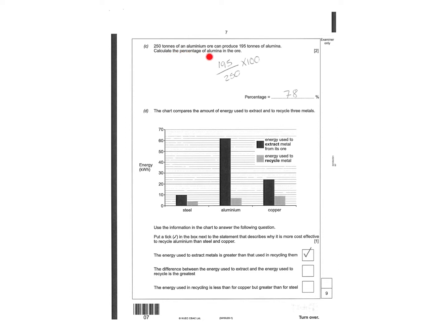250 tons of aluminum ore can produce 195 of aluminum. Calculate the percentage of aluminum in ore. So 195 divided by 250 is 78 percent. Put ticks in the box that's the statement describes where it's more cost effective to recycle aluminum than steel or copper. The energy used to extract metals is greater than the use of recycling them, which is different when you are extracting aluminum because it's a really big change you want to make sure that you recycle.